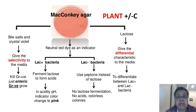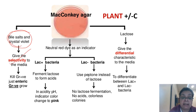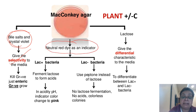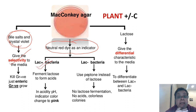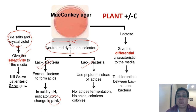A quick revision of MacConkey medium, which is a selective medium for gram-negative bacteria. To remember the ingredients of MacConkey medium, we use the mnemonic PLANT ± C: Peptone, Lactose, Agar, Neutral red, Taurocholate, and C is Crystal violet. The bile salts (sodium taurocholate) and crystal violet are the selective agents which inhibit the growth of gram-positives. Neutral red is the indicator — when lactose gets fermented, acids are produced and the neutral red becomes bright pink or magenta. When the bacterium does not utilize lactose, it utilizes the peptone; no acids are produced, so neutral red remains pale.